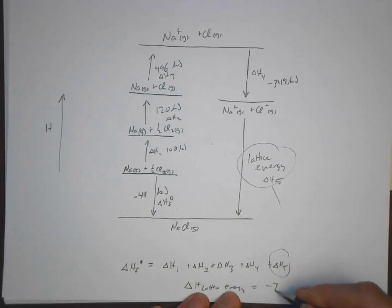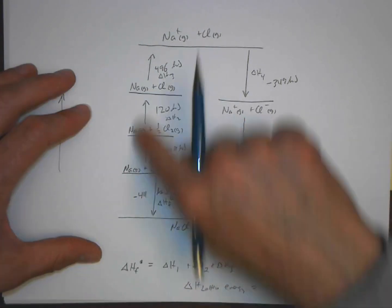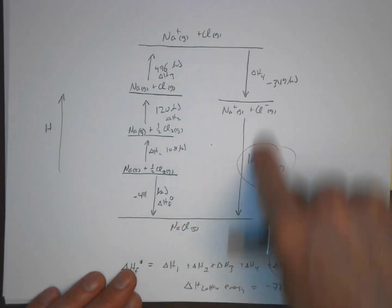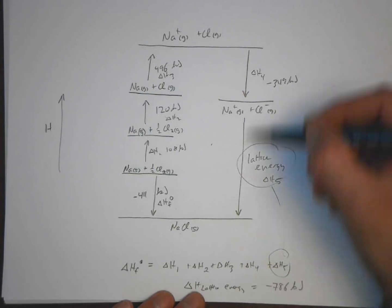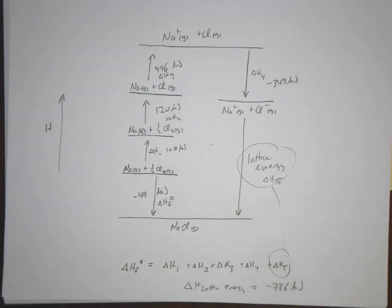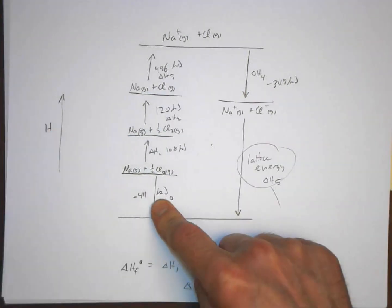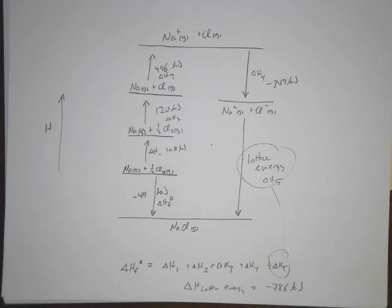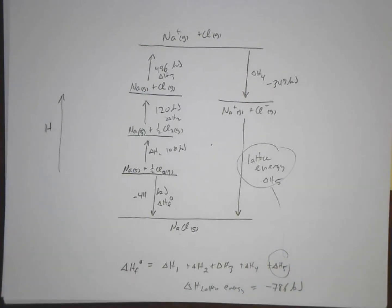We know the values of delta H1 through delta H4 for these different steps. We simply combine them and find that the lattice energy — delta H5 — is minus 786 kilojoules. This is the Born-Haber cycle: it's a special application of Hess's law used to find a value that is difficult to determine experimentally. Your textbook has a slightly different version, but the result is the same.